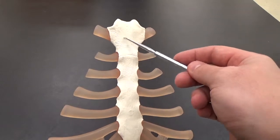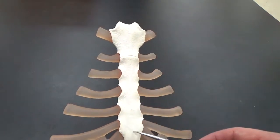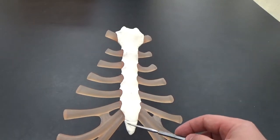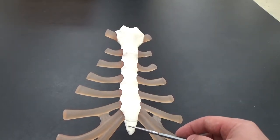The manubrium is this top part, the body is the long part in the middle, and the xiphoid process is here at the bottom, kind of the pointier part at the bottom.